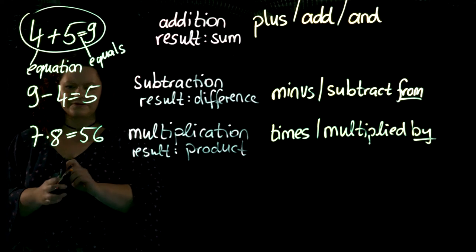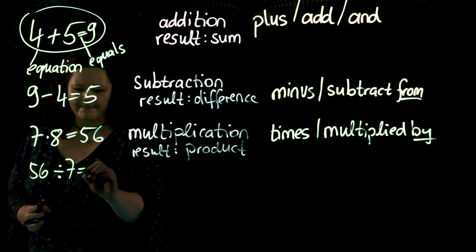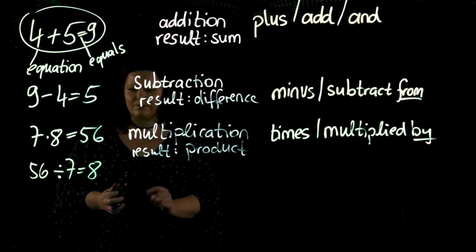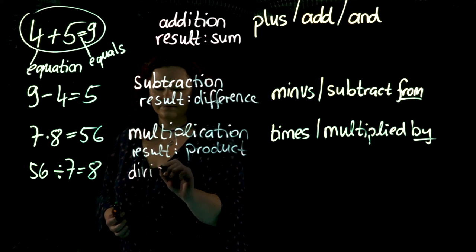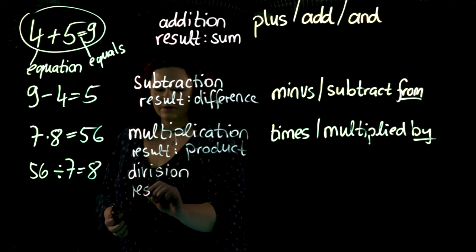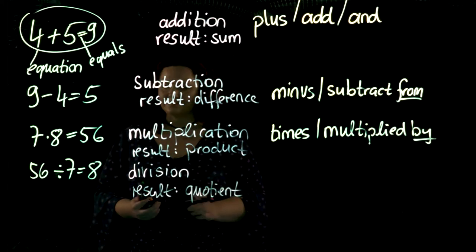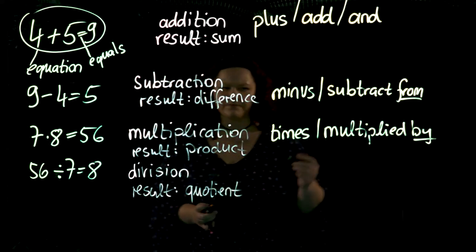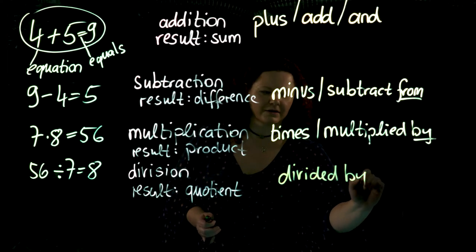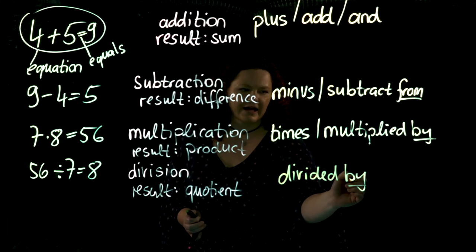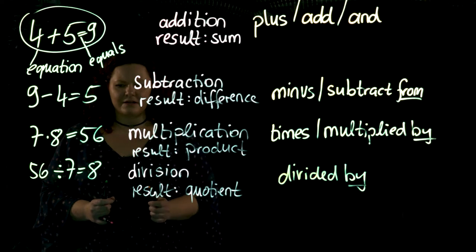We can do the reverse. We start with 65 and do this. What does this give us? This gives us the name of the operation, which is a division. The result of a division is called a quotient. We can say this with one English expression: divided by. Can you see the parallel? There is by here and by here. I can say 65 divided by seven equals eight.